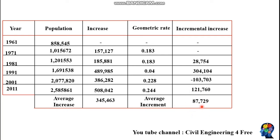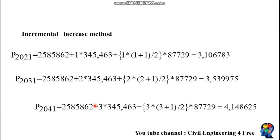The x value is the average increment from the arithmetic method. For 2021, n equals 1; plug in x and y accordingly. For 2031, n equals 2, and for 2041, n equals 3. Plug these values into the incremental increase formula to obtain the future population predictions.